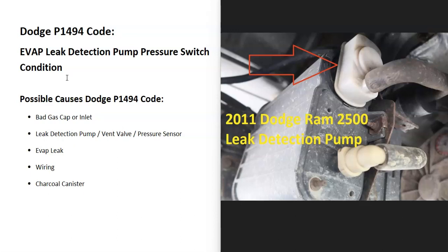And so what is a Dodge P1494 code? Well, it's an EVAP leak detection pump pressure switch condition. And what does this mean?